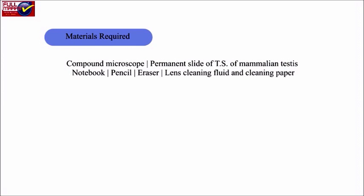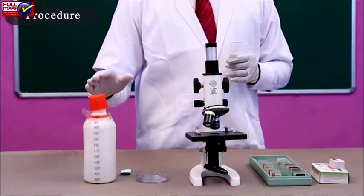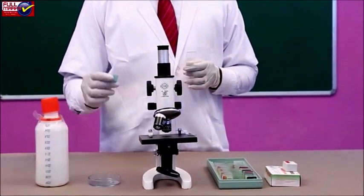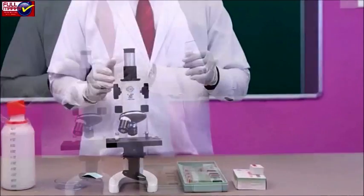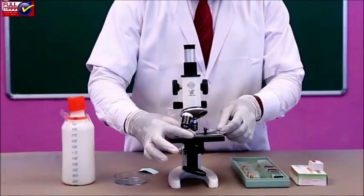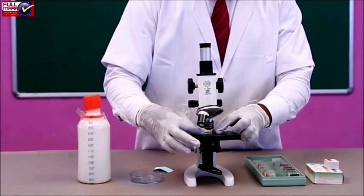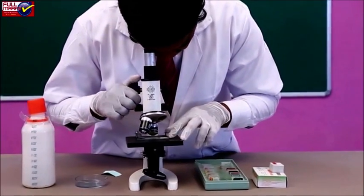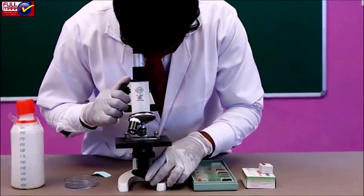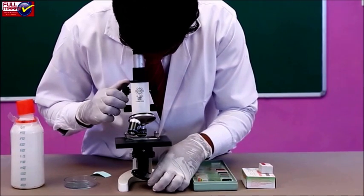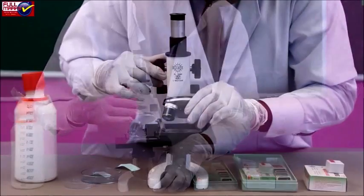Materials required: compound microscope, permanent slide of TS of mammalian testes, notebook, pencil, eraser, lens cleaning fluid, and cleaning paper. Procedure: clean the slide and microscope eyepiece and objective lenses with lens cleaning fluid and cleaning paper. Place the slide on the stage of the microscope. Observe the slide first under lower magnification, then under higher magnification. Observe the various stages of gamete development, then draw and label them.